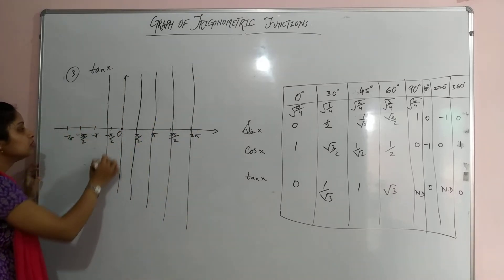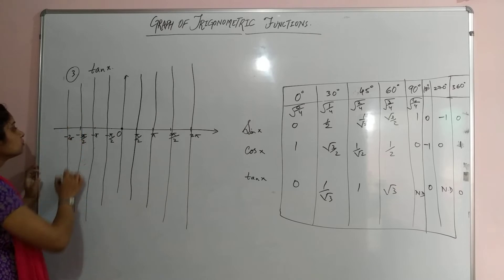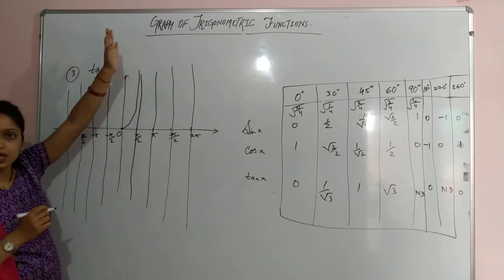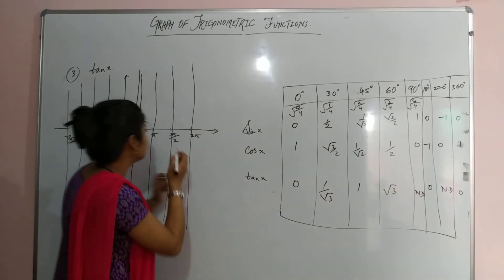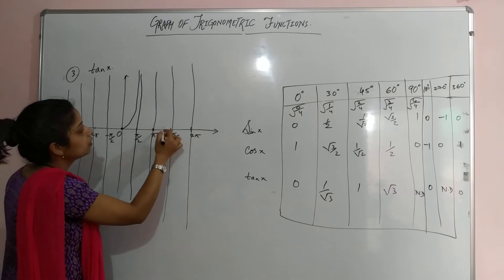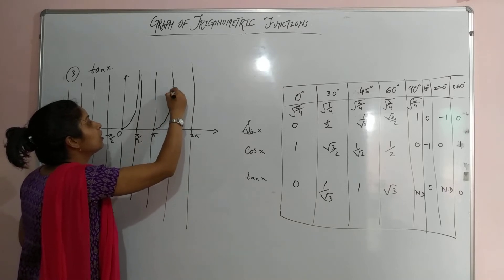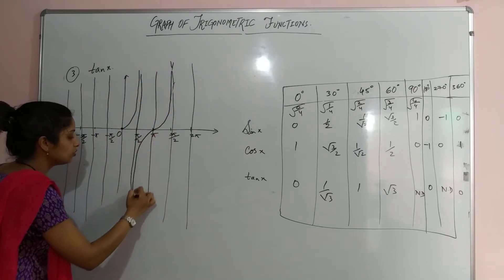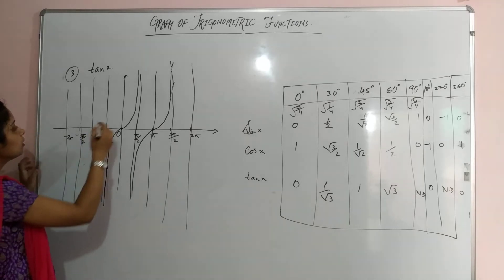Because tan is undefined at π/2, we draw a vertical asymptote — a dashed line parallel to the y-axis at π/2, and similarly on the left-hand side. The graph tends towards infinity as it approaches π/2. At π (180°), tan is 0 again, so the curve returns to 0. At 3π/2, it is again undefined, so the curve tends towards infinity there as well, on both the upper and lower sides.